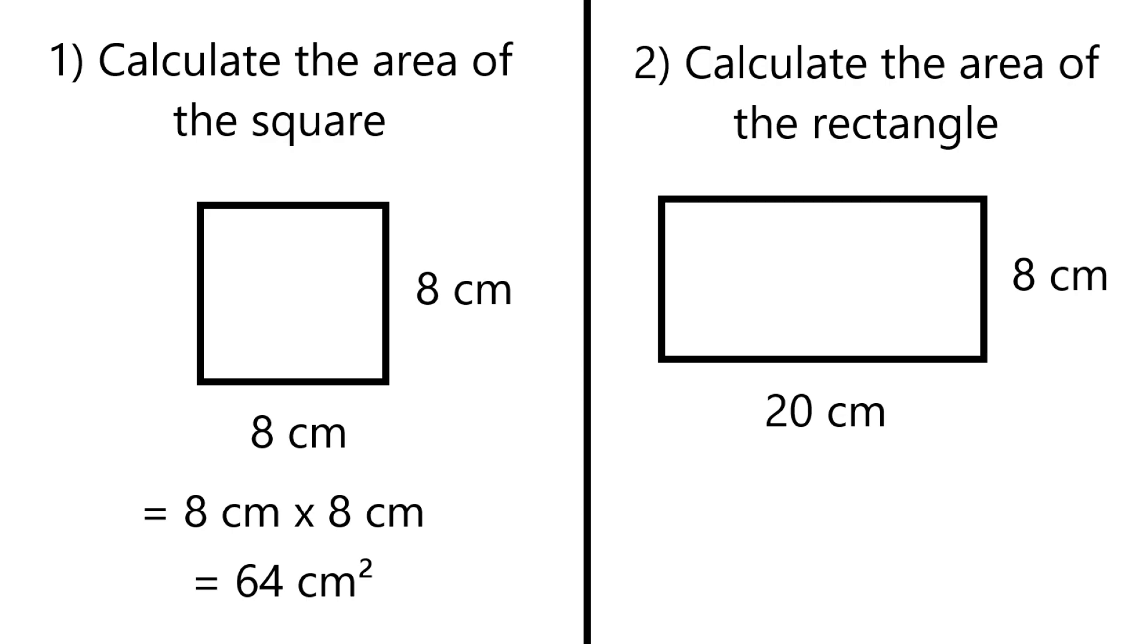Calculate the area of the rectangle that's 20 centimeters times 8 centimeters. We know from the first question we just multiply them together, and 8 times 20 is 160 centimeters squared.